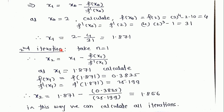For the second iteration, we take n = 1, substituting the values to calculate f(x₁) and f'(x₁), then substituting into the equation. We get the second iteration result: x₂ = 1.856. In this way we can calculate any number of iterations up to the desired root.